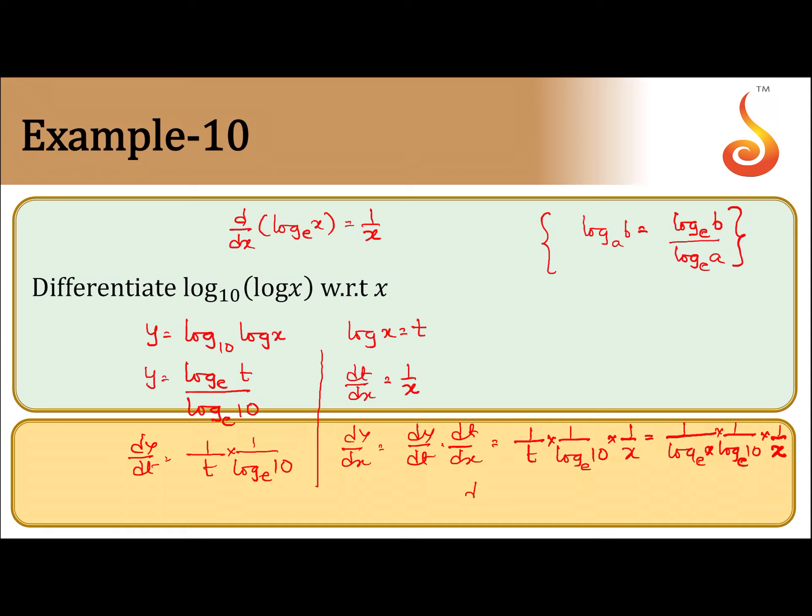So finally we got dy by dx is equal to 1 by x log base e x into log base e 10. Done.